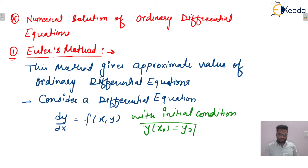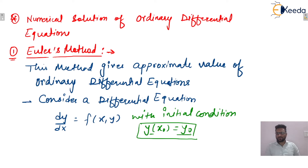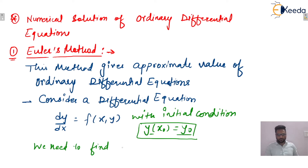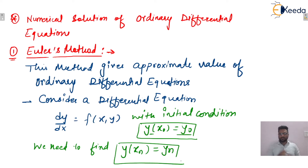The meaning of this initial condition is: at x = x₀, the value of y is y₀. We need to find the value of y at xₙ. At x = xₙ, what will be the value of y? Let us consider that value of y is yₙ — that is the task to be done.